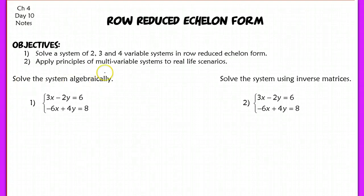For the first system, I want to solve this algebraically. I think the easiest way is to multiply by 2 to eliminate the x's. I get 6x minus 4y equals 12. When I add these two lines together, I get 0 equals 20, which is a false statement. Because it's false, we say this has no solution because these lines are parallel.